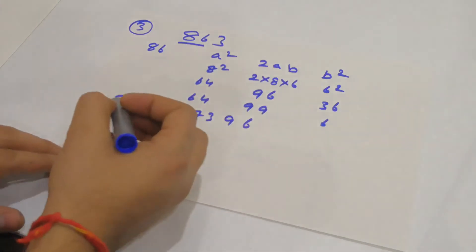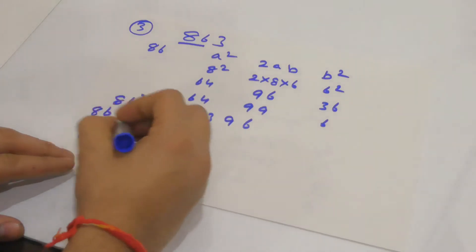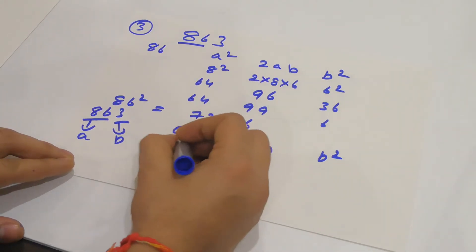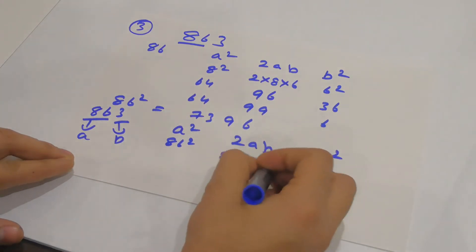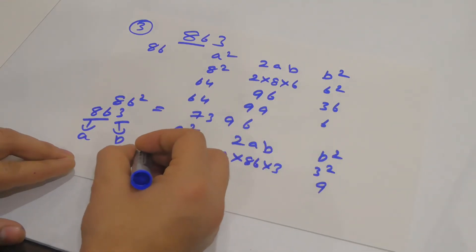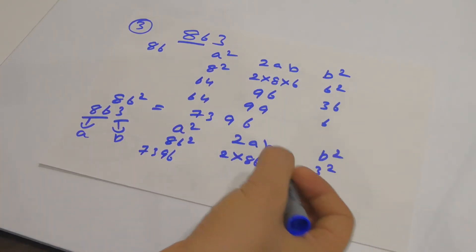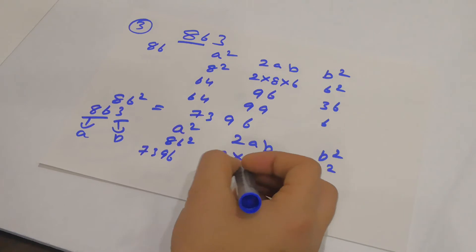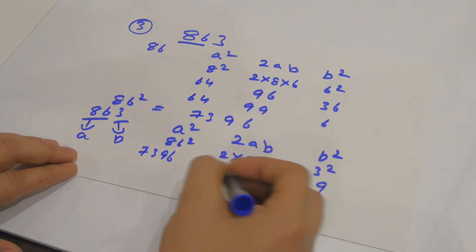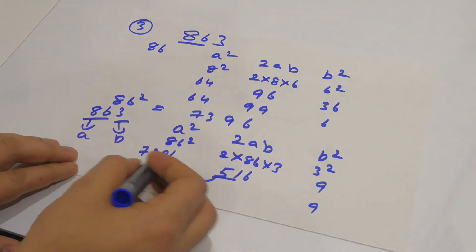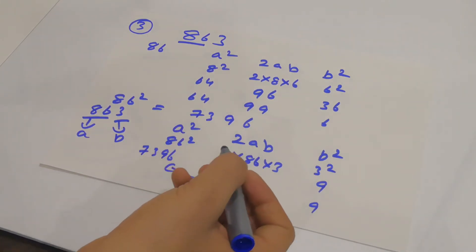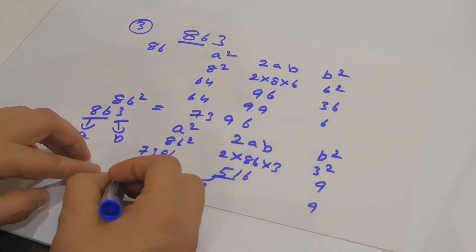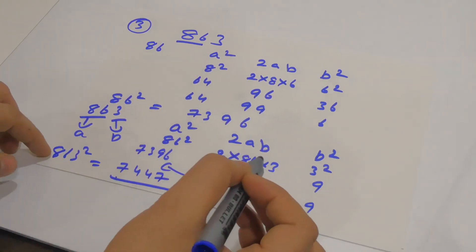Now I'll find the square of 863 as a whole. Dividing into A = 86 and B = 3, and applying A² + 2AB + B²: A² = 86² = 7396, B² = 3² = 9, and 2AB = 86 × 3 = 258, then 258 × 2 = 516. Keeping 9 as the last digit, carry 51 from 516 to the previous column: 7396 + 51 = 7447. So the final answer is 744769.